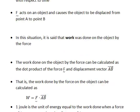The work done on the object by the force can be calculated as the dot product of the force F and the displacement vector AB, remembering the object is being moved from A to B. That is, the work done by the force on the object is calculated as W, which will be a scalar, equal to the force vector in a scalar product with vector AB.